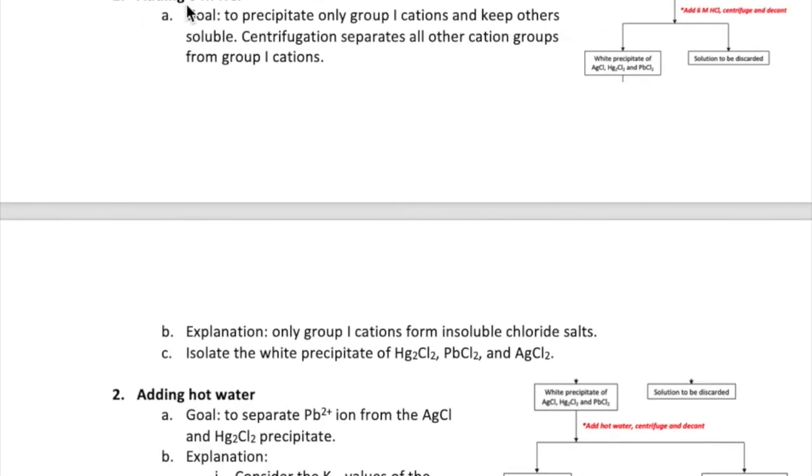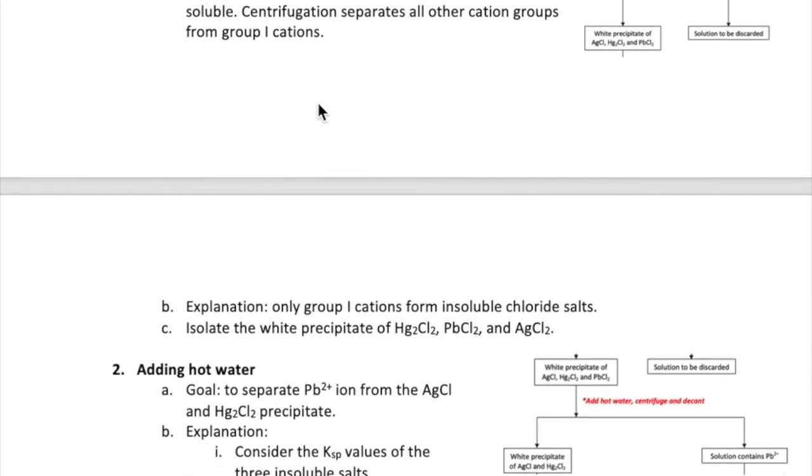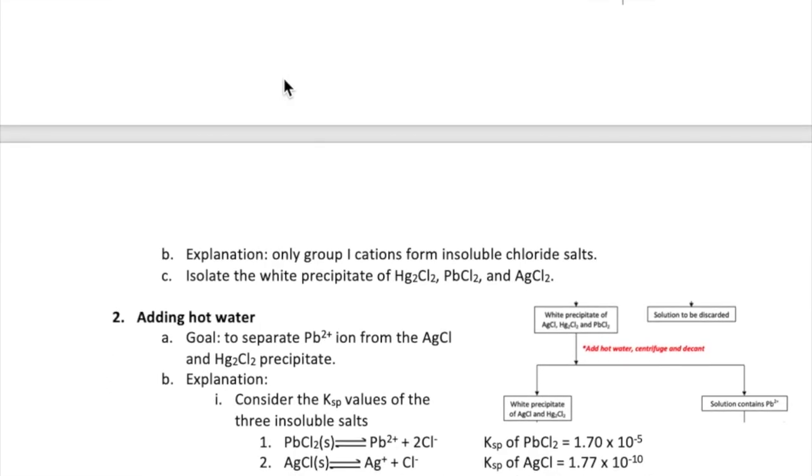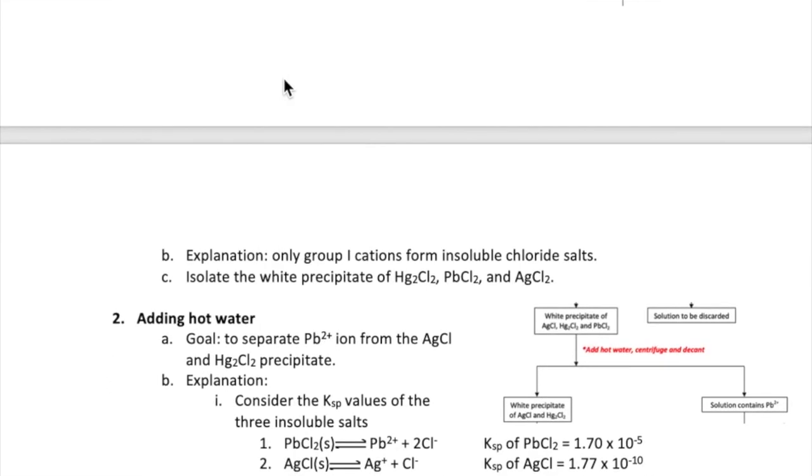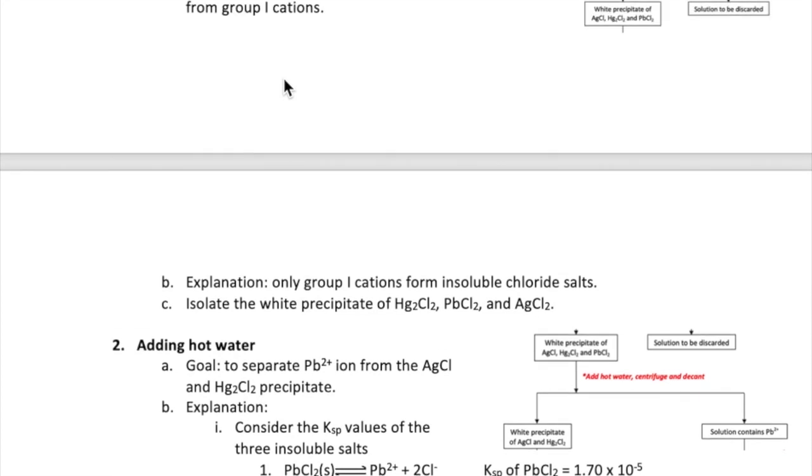Let's start with step one, which is the addition of six molar HCl to a solution that may contain your ions. This is meant to precipitate only the group one cations, which is silver, lead, and mercury, and separate them from all the other ions, which will still be soluble. Centrifugation will separate the white precipitate containing the insoluble chloride salt from the solution containing all the other ions.